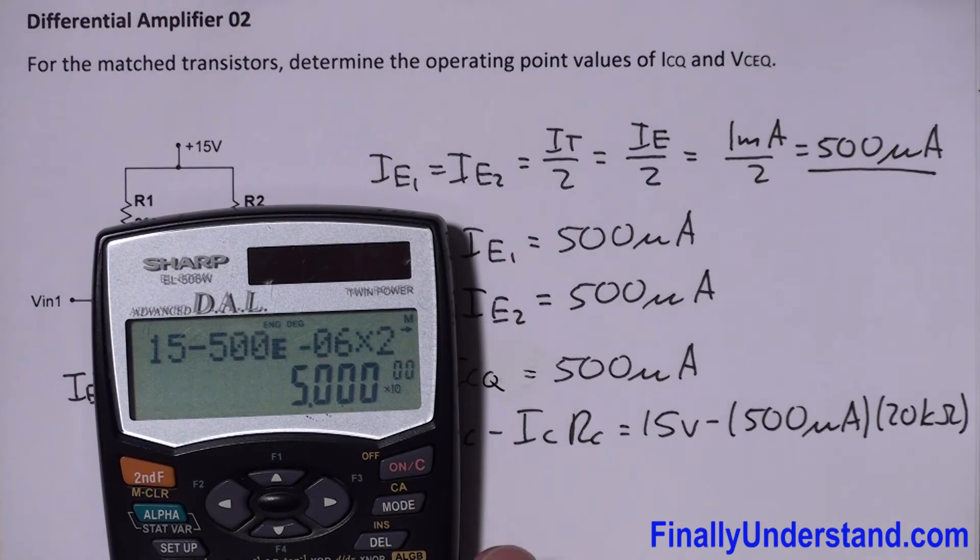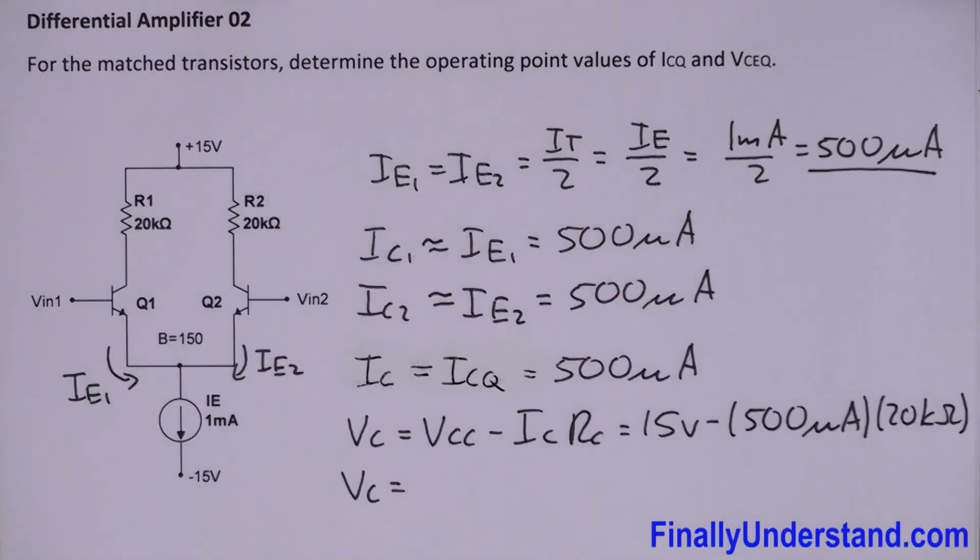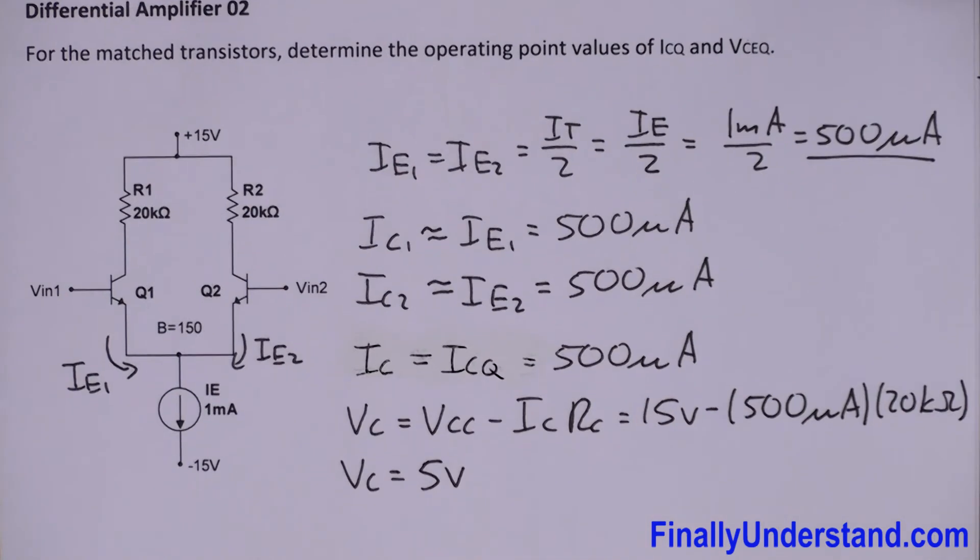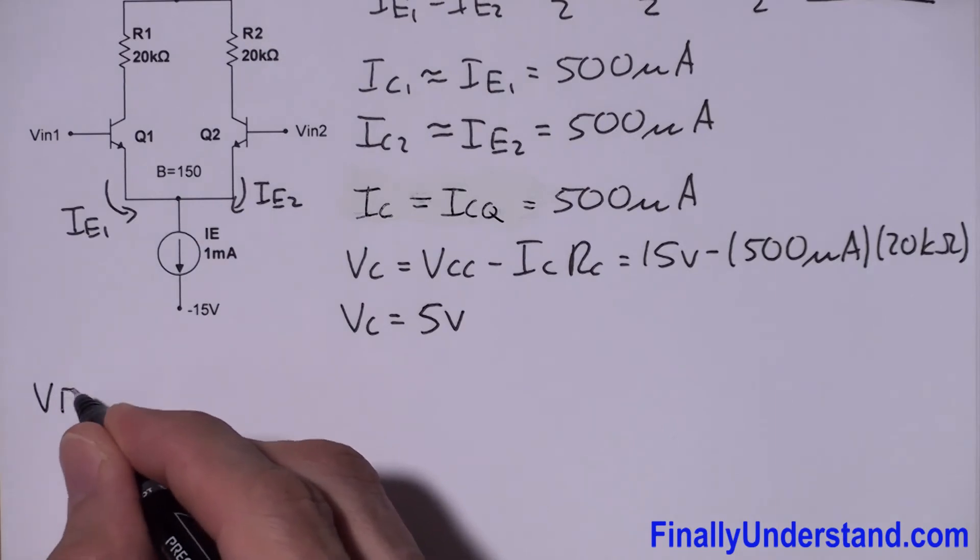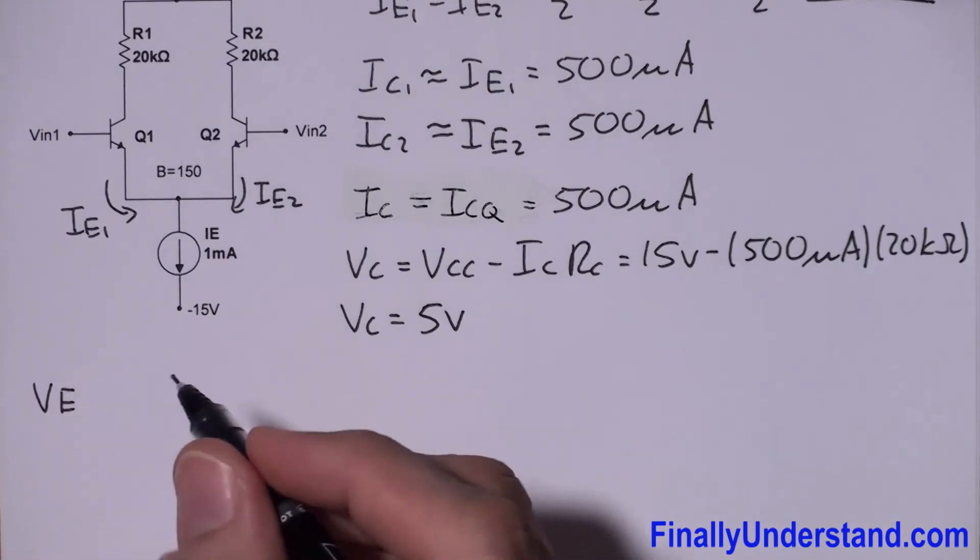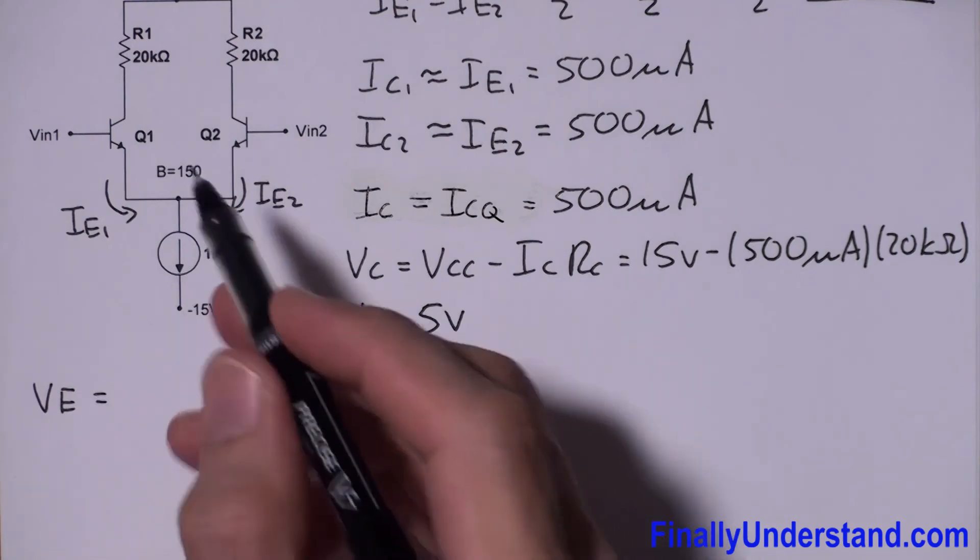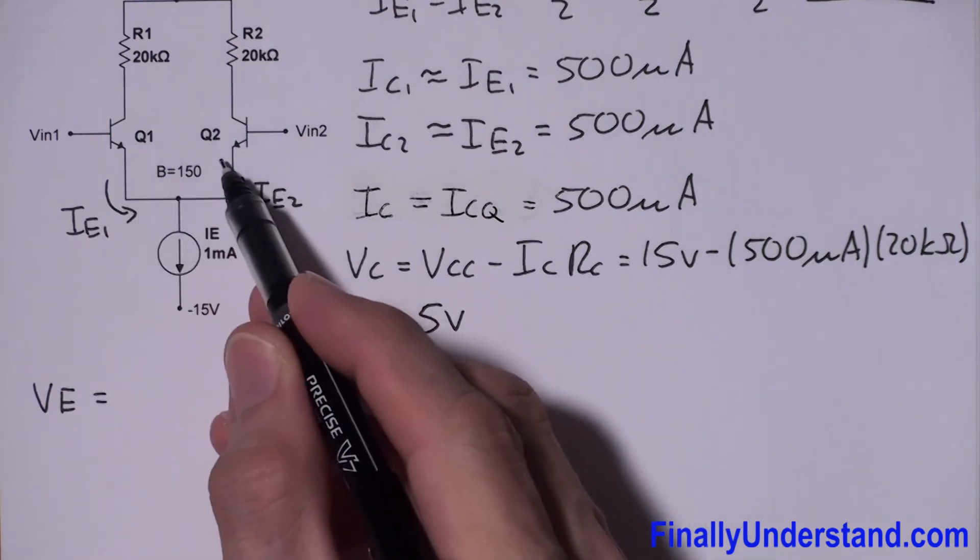So VC is equal to 5 volts. This is VC1 and VC2. VC is equal to 5 volts. Next we're supposed to find VE, which is the voltage at each emitter.